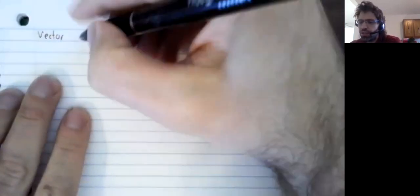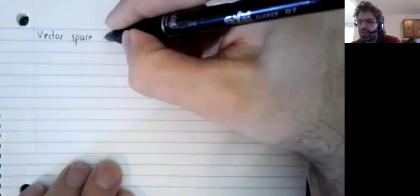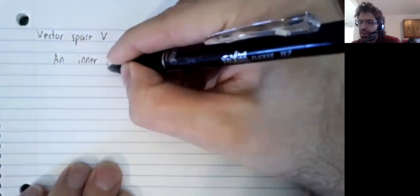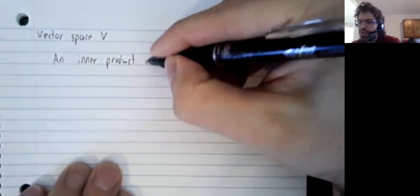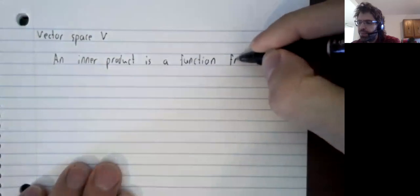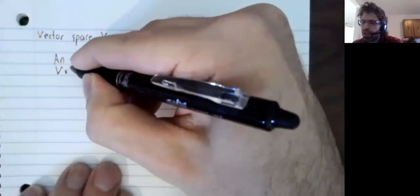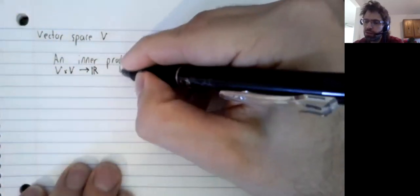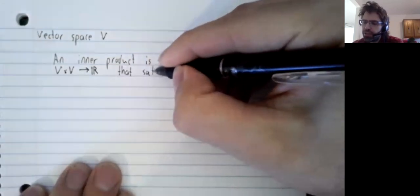In this video we are going to define inner products. Say you've got a vector space V. An inner product is a function from the Cartesian product of V with itself to the real numbers that satisfies certain conditions.